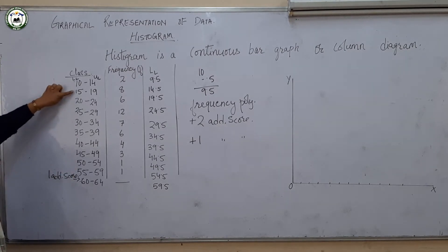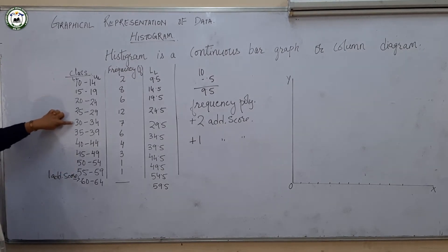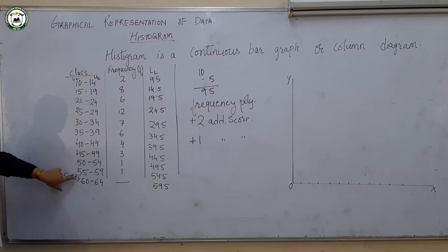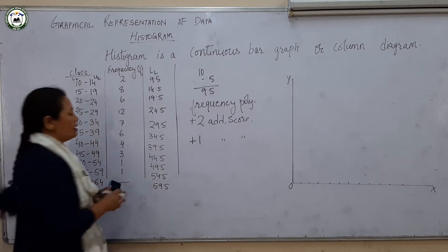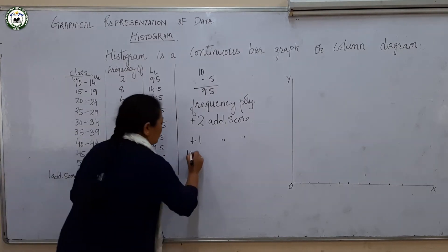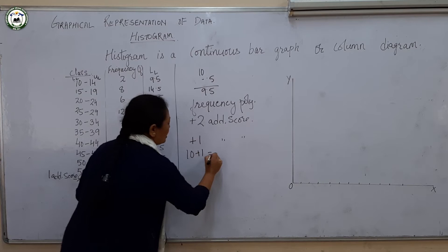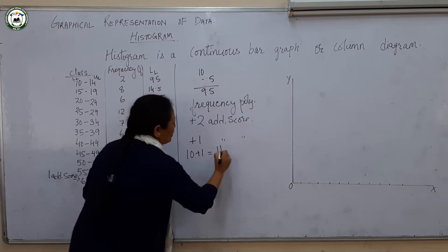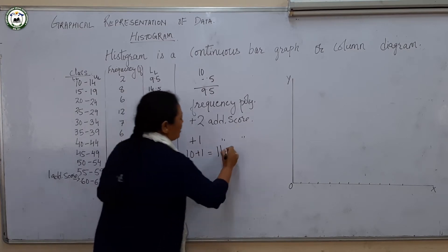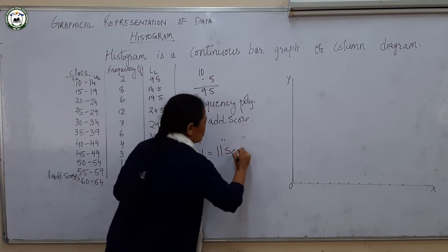Altogether we have 11 scores, that is 10 class intervals plus 1 additional score, so 10 plus 1 equals 11 scores in total.